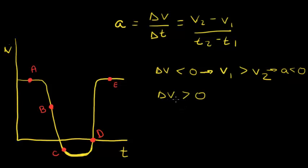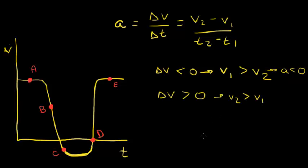When we have a positive change in velocity, our final velocity is going to be greater than our initial velocity. So this means we're starting out at a lower velocity — for example, one meter per second going towards two meters per second, or going from negative four meters per second to zero meters per second. Either way, the numbers don't really matter; what matters is the overall change in velocity. When we have a positive change in velocity, our acceleration will be positive.